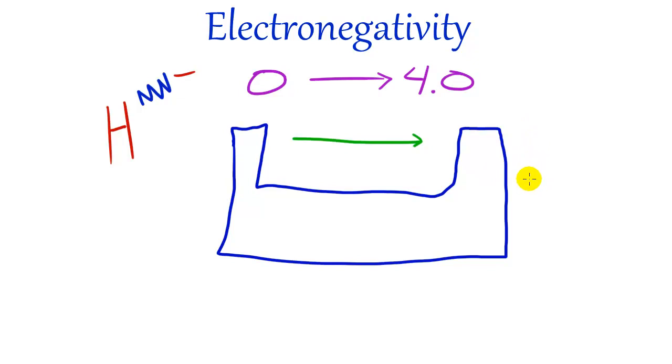And also, it decreases from top to bottom. In other words, the strongest elements are on the top right and the weakest ones are on the bottom left. So that is what electronegativity is.